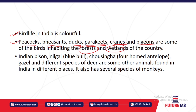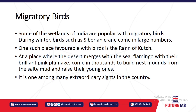Bird life is colorful in India. You have different types of birds — peacock, pheasants, ducks, parakeets, cranes, and pigeons — found in the wetlands or forest regions of the country. Different animals are also found, including the Indian bison, Nilgai or blue bull, Chausinga — the four-horned antelope, gazelle, and different species of deer. India also has several species of monkeys.